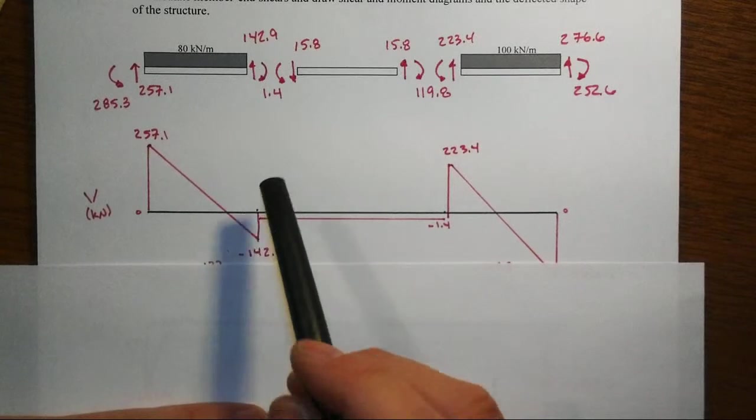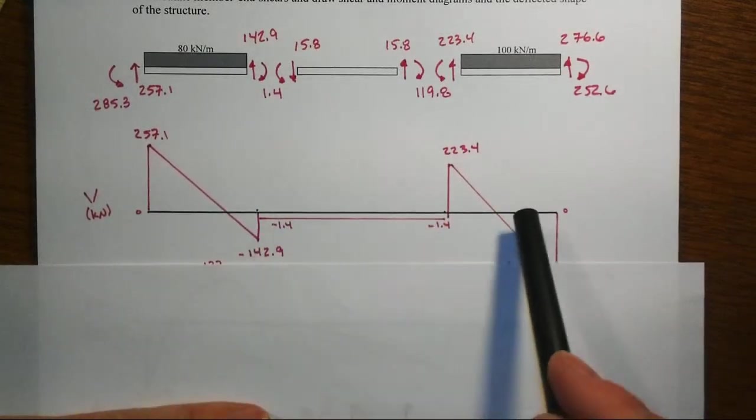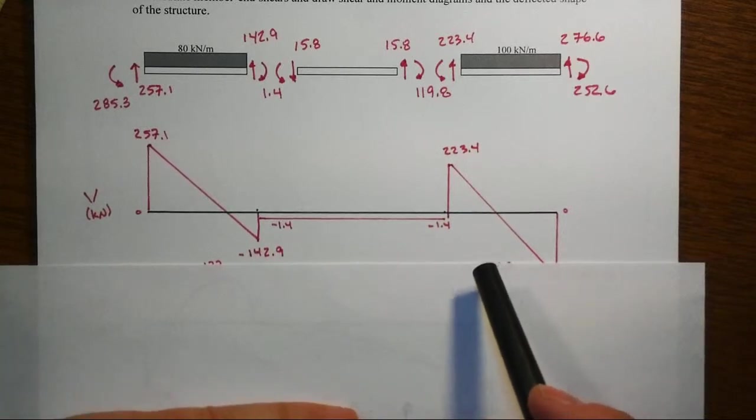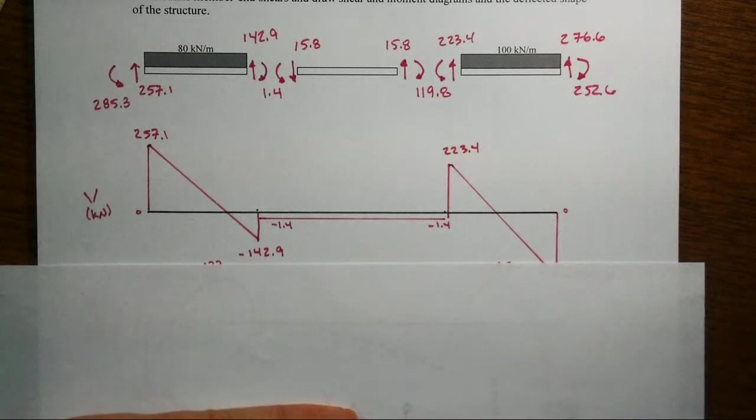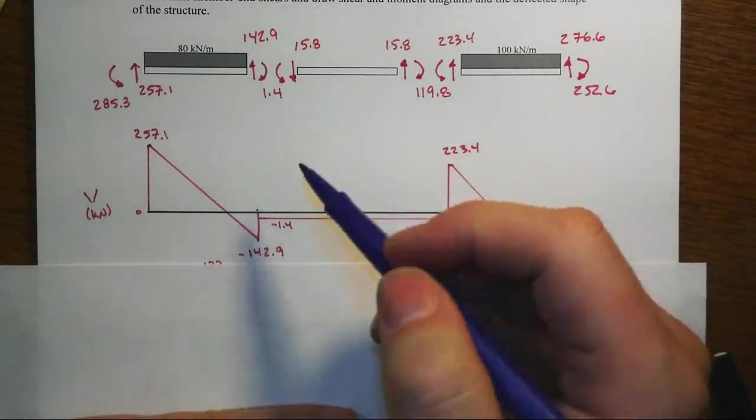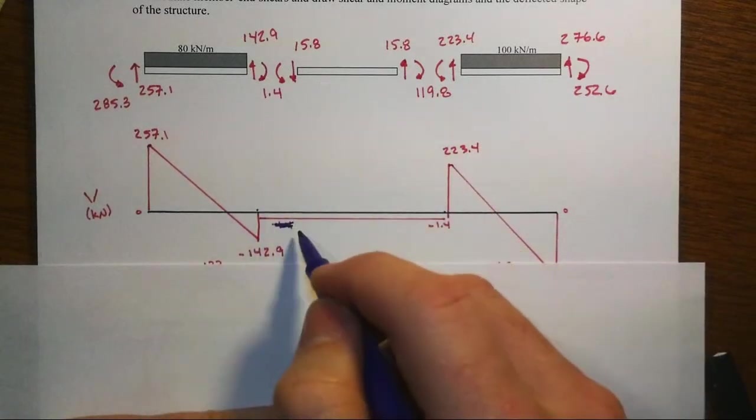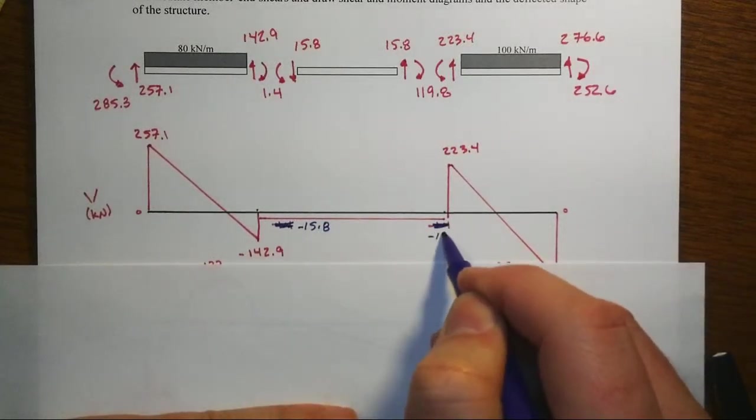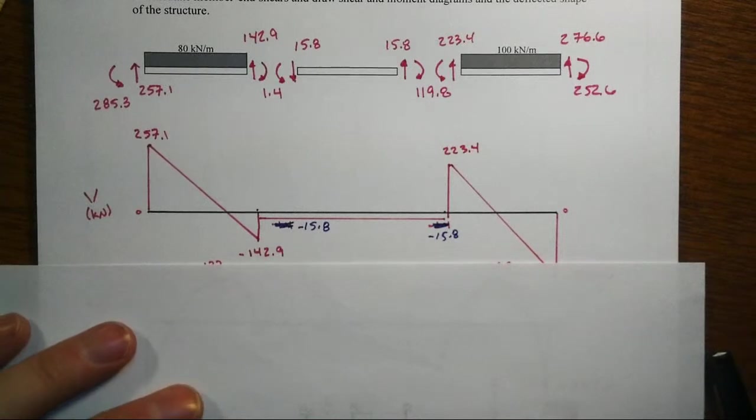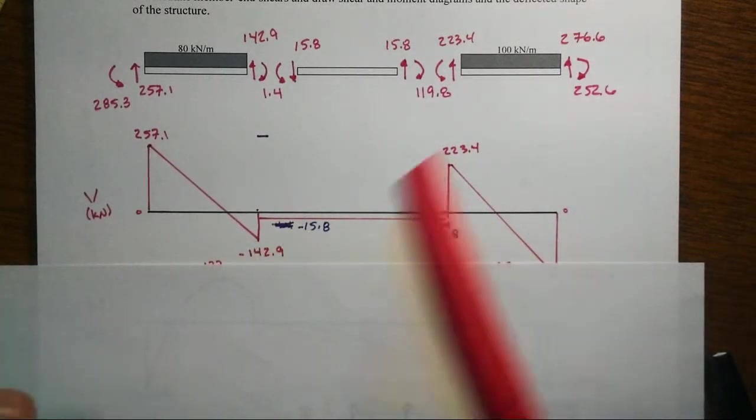When you have these consecutive spans like this, don't draw the shear and moment diagrams as three separate things. Do it all at once, because when you do it at three separate ones, you mask how this system is all entirely working together. For instance here, this difference in the shear, which should be minus 15.8, that difference in shear is in reality the reaction coming from B.